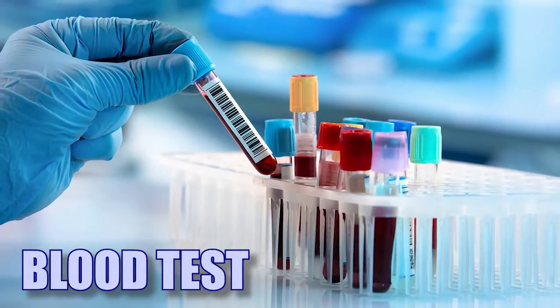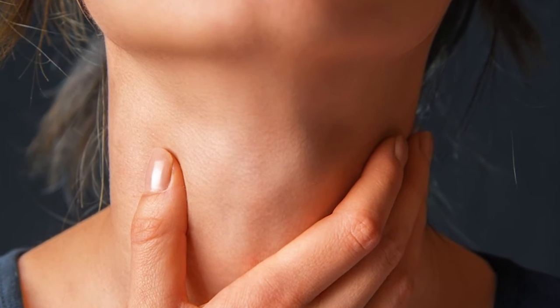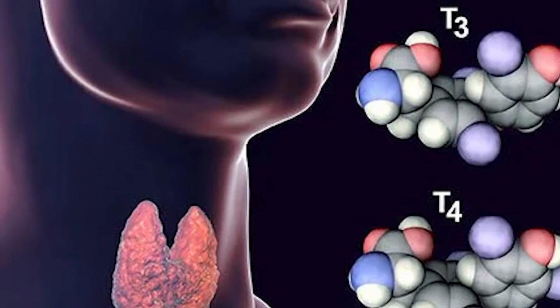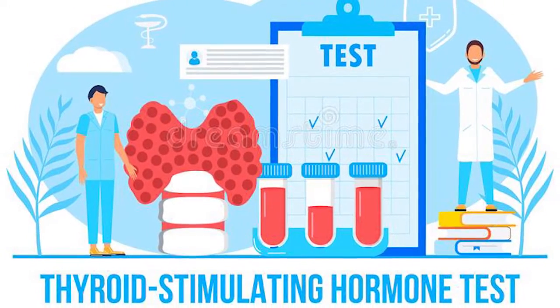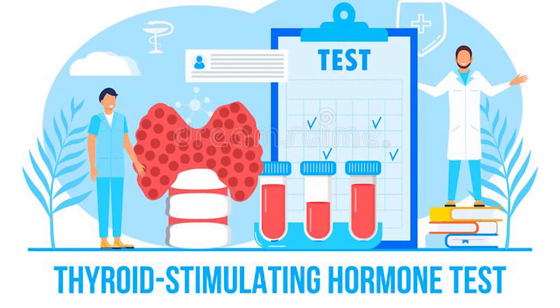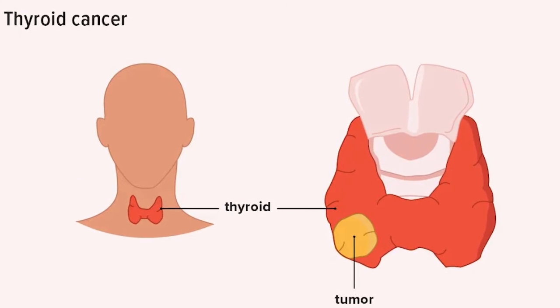Now, regarding investigations — what we do depends on the individual, but broadly speaking, the first investigation is a blood test of your hormones. Thyroid is an important endocrine gland that secretes hormones like T3 and T4. We want to find out the level of T3, T4, and also TSH — that is, thyroid stimulating hormone. When you have thyroid cancer, the TSH levels are usually on the lower side.